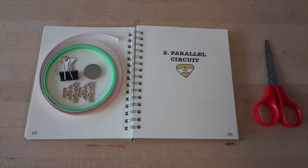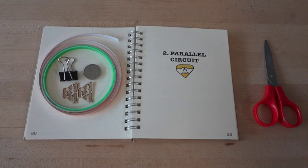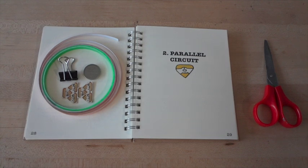In this tutorial, you'll need three LED stickers, one coin cell battery, one binder clip, some copper foil tape, and scissors to cut your tape.